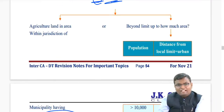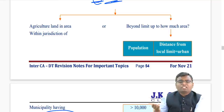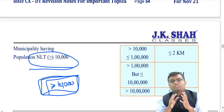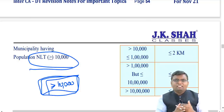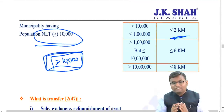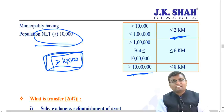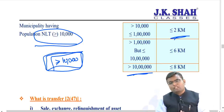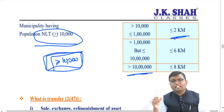Beyond the city limits, some kilometers are still considered urban agricultural land, depending on population. If the population is 10,000 to 1 lakh, up to 2 kilometers from the city is urban. If population is 1 lakh to 10 lakh, up to 6 kilometers is urban. If population exceeds 10 lakh, up to 8 kilometers is urban. Beyond these limits, the land is rural.